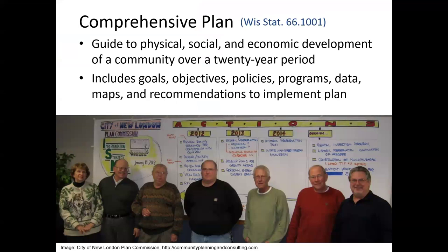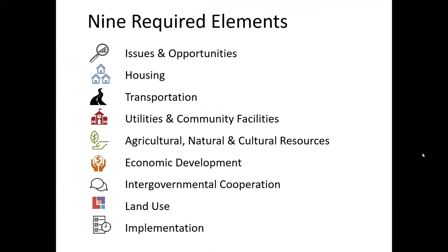From a definitional perspective, state statutes say the comprehensive plan is a guide to the physical, social, and economic development of your community over a 20-year period. It includes goals, objectives, policies, programs, quite a bit of data and maps, as well as recommendations for how to implement the plan. It's comprehensive because you're required to address nine different elements — I like to think of these as topics. Many communities organize their plan around these different topics. This is pretty diverse: things like housing, transportation, utilities and community facilities, natural resources, economic development, and so forth.